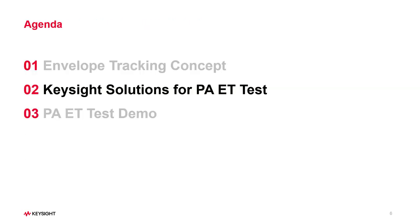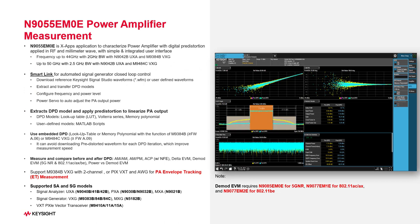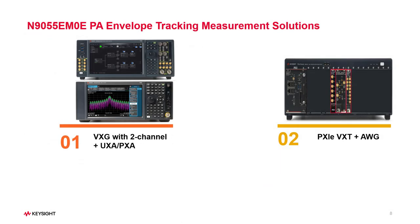Now let's talk about the Keysight solutions for the PA ET test. N9550E is a power amplifier measurement application running on the X-series analyzers. We've already seen how it works for PA DPD measurement with 5G NR FR1 and Wi-Fi signals in former videos. This year, it also supports PA envelope tracking measurement. There are two solutions for the PA ET test: one is based on benchtop instruments — signal generator VXG with two channels plus an X-series analyzer UXA or PXA platform; another is based on modular instruments — PXIe VXT plus AWG.